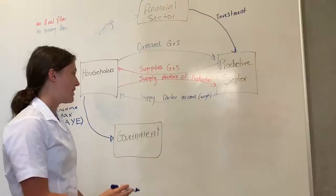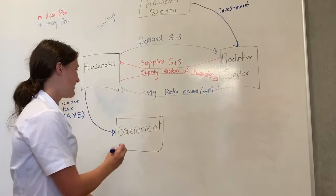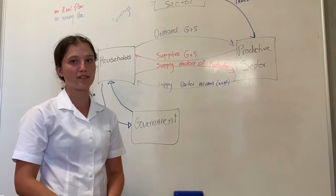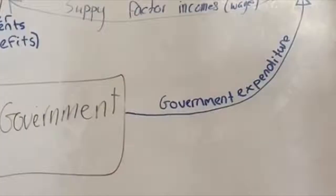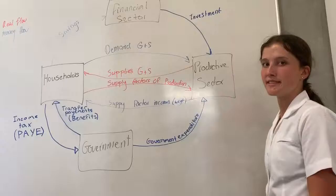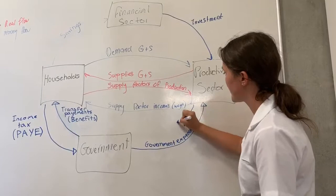In return, the government pays transfer payments, otherwise known as benefits. These are provided to the people who need them — for example, single parents. Government expenditure is when the government pays money for the firms to build something for the public; this could be a road or a hospital. In return, the productive sector pays the government their profit tax, known as corporate tax.